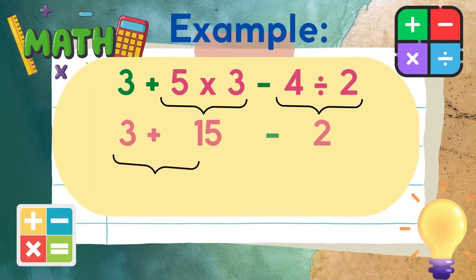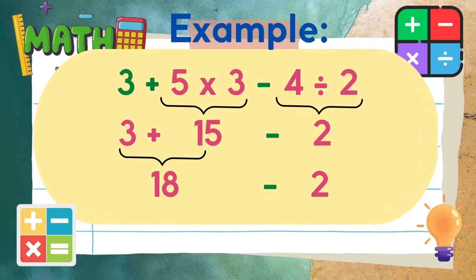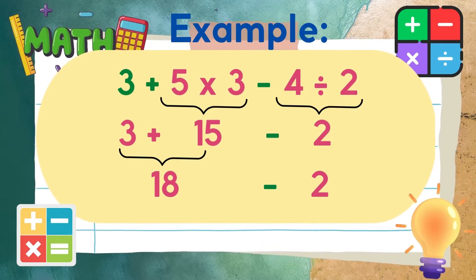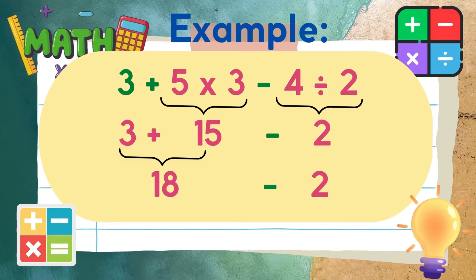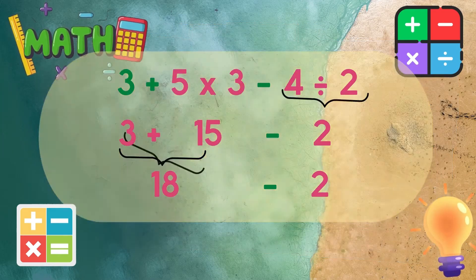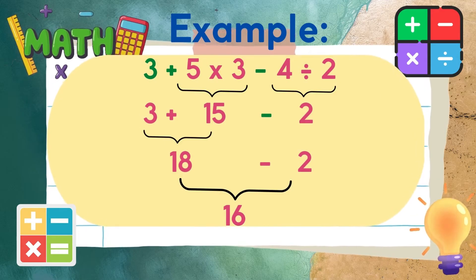Now, we have 3 plus 15 minus 2. We need to add first before we subtract. So 3 plus 15 is equal to 18. Finally, 18 minus 2 is equal to 16.